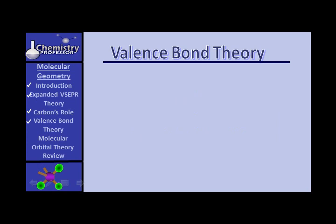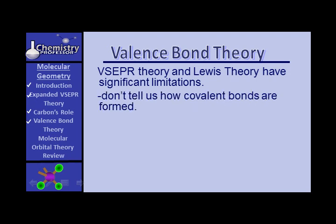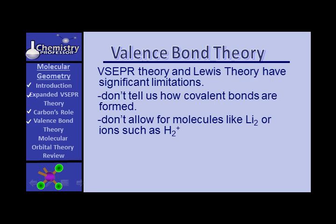Now we're ready for valence bond theory. VSEPR is nice — it tells us geometry — and Lewis is interesting, but they both have very significant limitations. They don't tell us how covalent bonds are formed, and they don't allow for molecules like diatomic lithium or the dihydrogen cation.